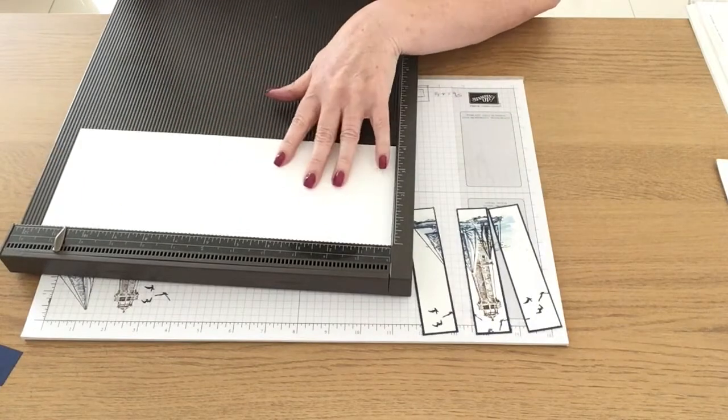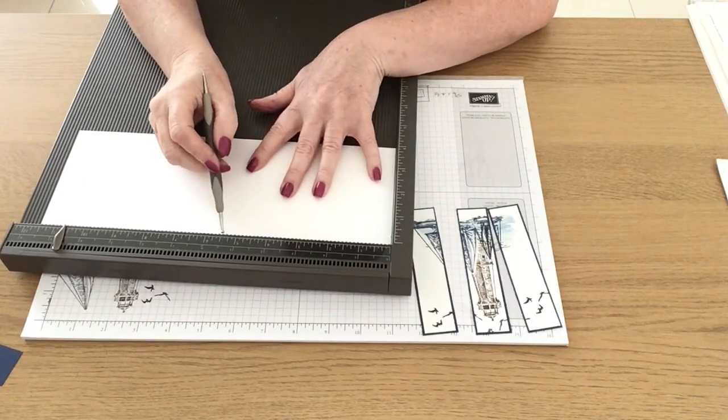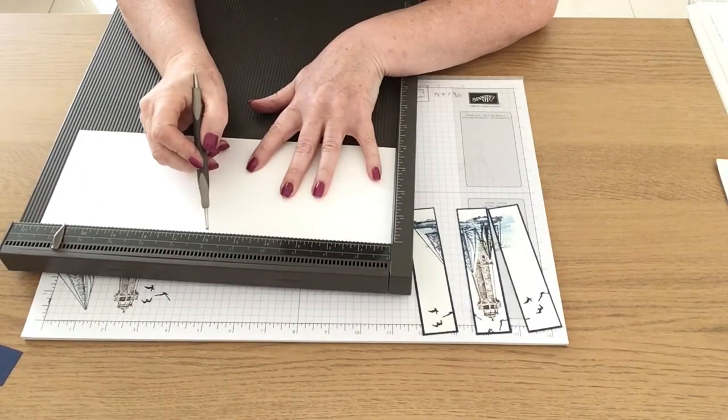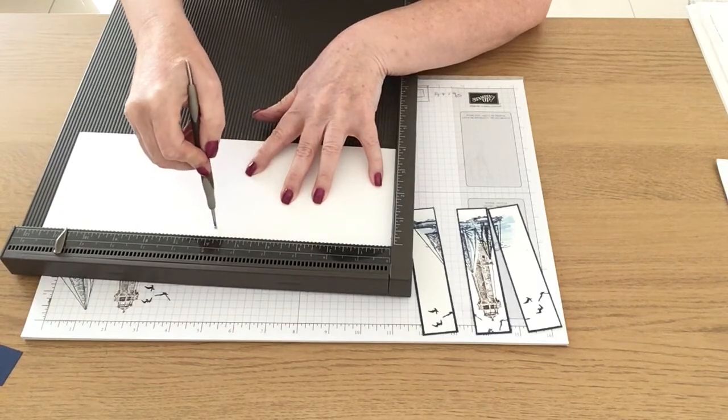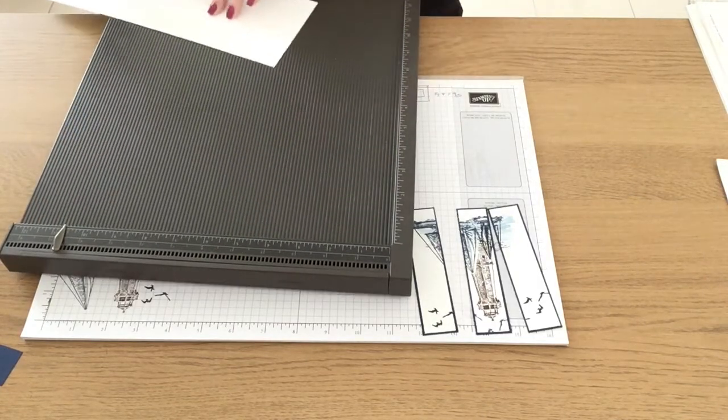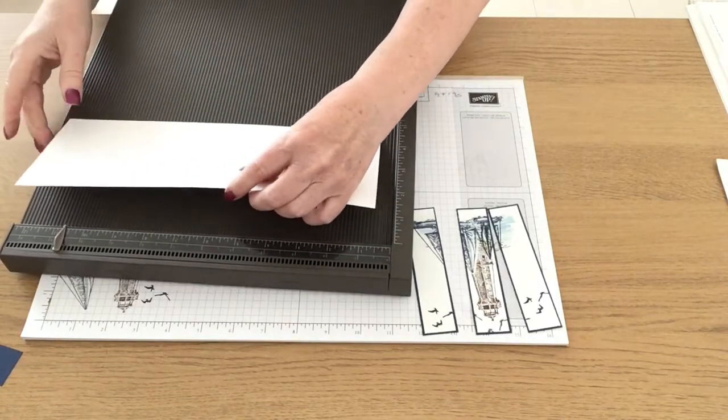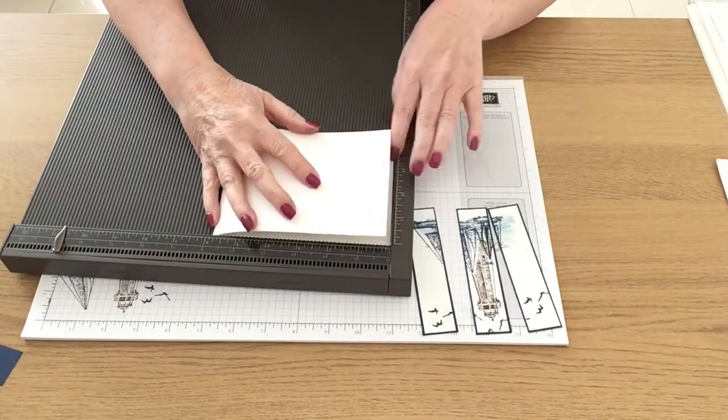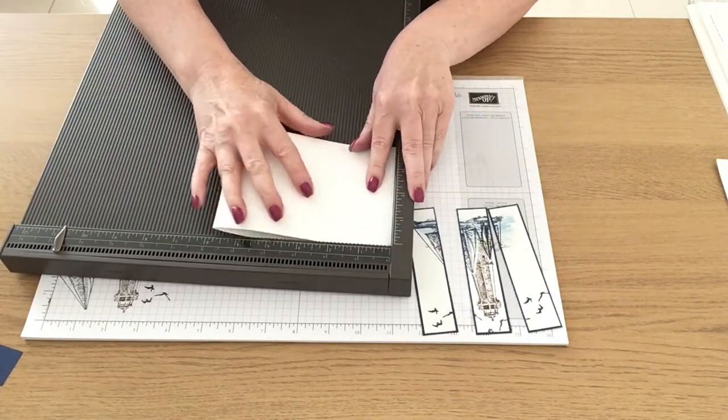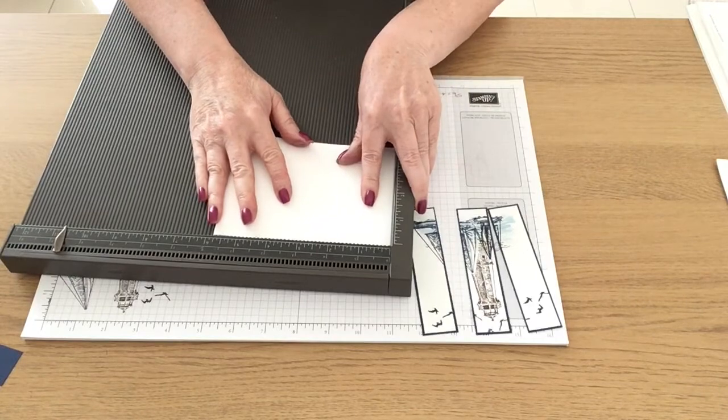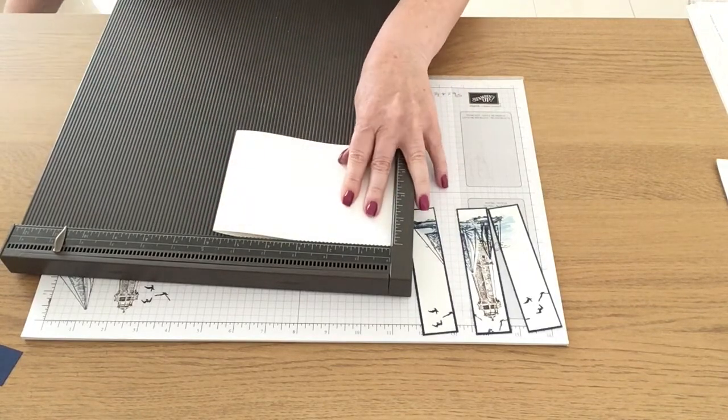I've now got a piece of thick Whisper White card which I've cut down the middle on the short side and I'm now going to score it at five and seven-eighths and I'm going to fold it and burnish it with my bone folder and this is going to be my base card.